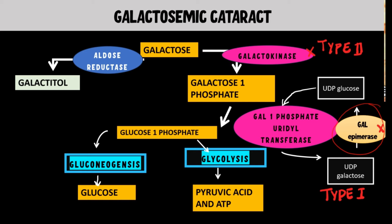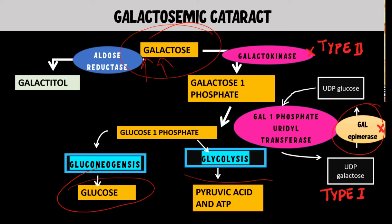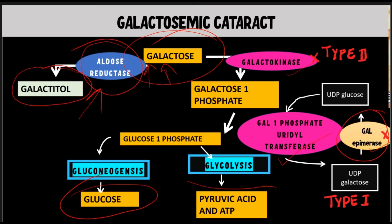An absence of any of these three enzymes involved in the conversion of galactose to glucose will lead to accumulation of galactose in the blood. As galactose levels increase, lacking those metabolic enzymes, the galactose takes an alternative pathway via the enzyme aldose reductase, leading to formation of an alcohol called galactitol. An important point to remember is that galactitol is an osmotic agent, so its accumulation in the lens results in osmotic swelling of the lens fibers due to hydration.